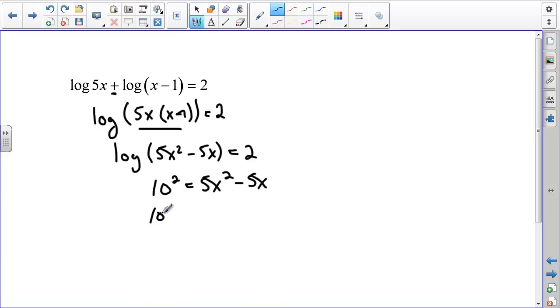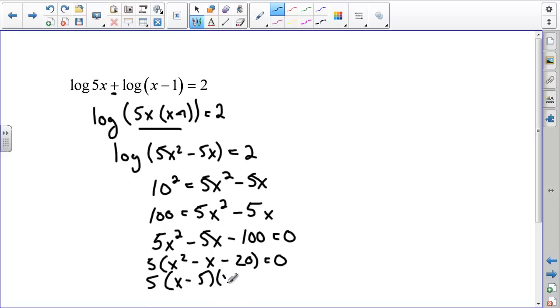I can actually say 10 squared equals 5x squared minus 5x. Simplifying, I get 100 equals 5x squared minus 5x. Set it all equal to 0, and I get 5x squared minus 5x minus 100 equals 0. There's a 5 common in all the terms, so I say 5 times x squared minus x minus 20. Now, I need to factor, so I get 5 times x minus 5 times x plus 4, and that's equal to 0, giving me answers of x equals 5 and x equals negative 4.